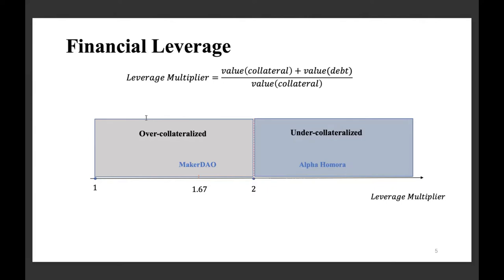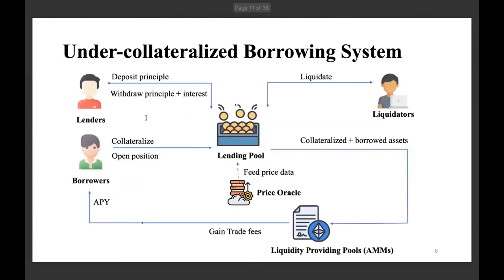In undercollateralized borrowing, the borrowers can't use the borrowed assets freely. They have to provide their collateralized and borrowed assets into liquidity-providing pools to gain some trading fees and APY. Before we describe this process, let's first introduce AMMs, or liquidity-providing pools.